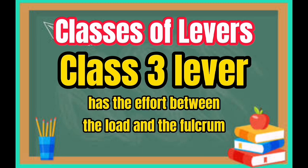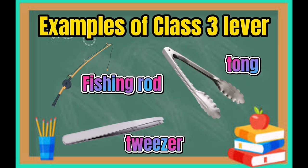Class 3 lever has the effort between the load and the fulcrum. Examples of class 3 levers are a fishing rod, tong, and tweezer.